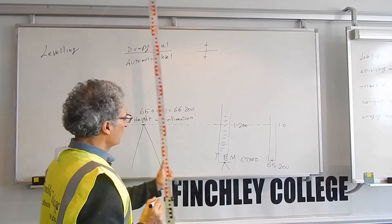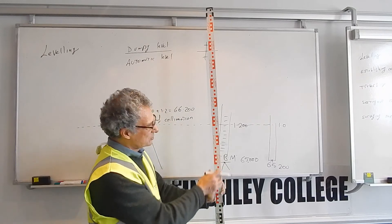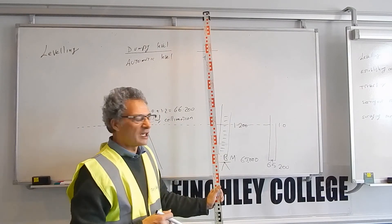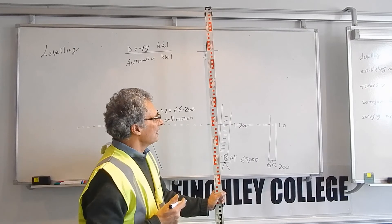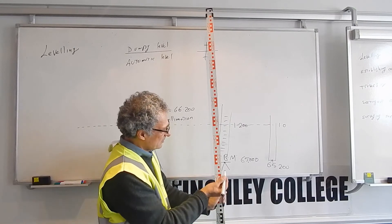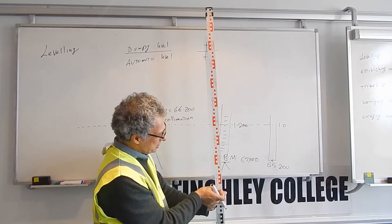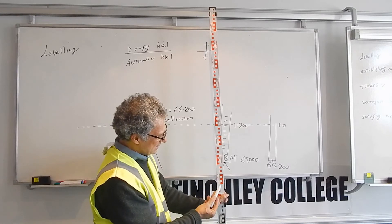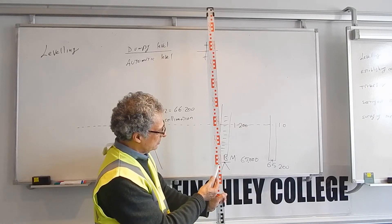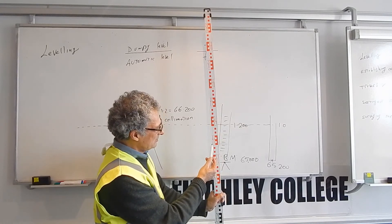Before we go too far, I want to go through the staff. A typical staff is either 4 or 5 meters. It starts from zero and shows graduation every 100 millimeters. For example, this is 3.1, 3.2, 3.3. That's 3 meters 300 millimeters.